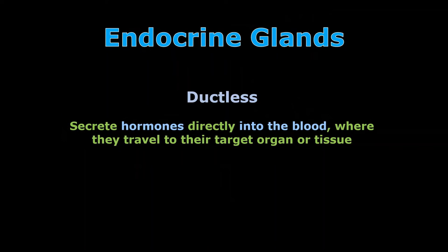Endocrine glands are ductless, meaning they don't have a tube or a duct that the secreted product travels through. In an endocrine system, the product is called a hormone. These hormones are secreted straight into the blood, and then they will use the bloodstream to deliver them to their target — a target organ or a target tissue. We use the word target a lot when we talk about the endocrine system.